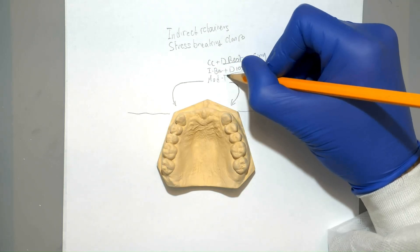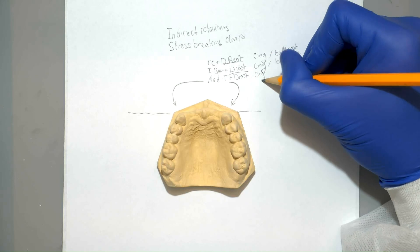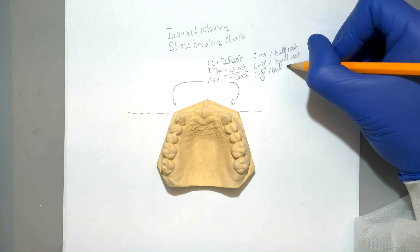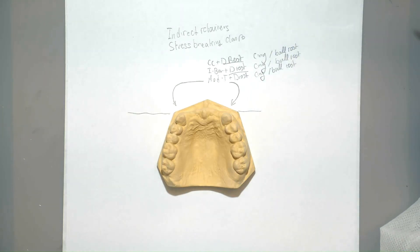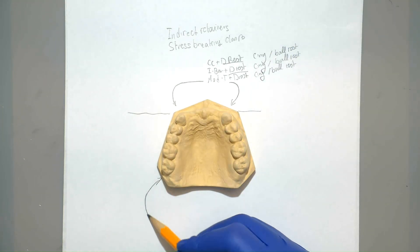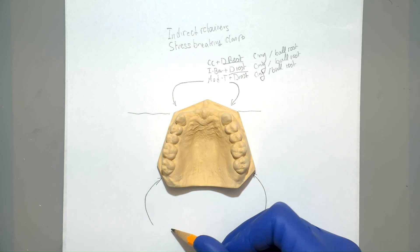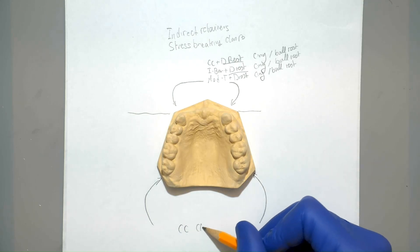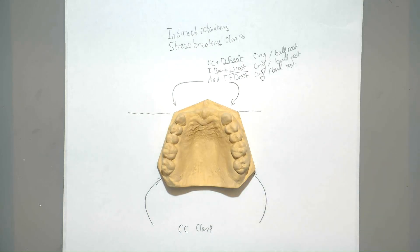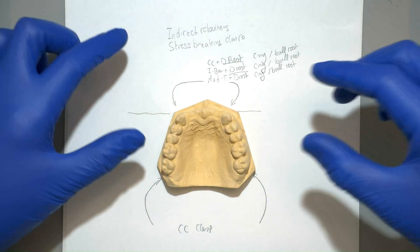We can also use a modified T clasp with a distal rest or a cingulum rest. On the posterior teeth, we'll default back to the normal cast circumferential clasp.